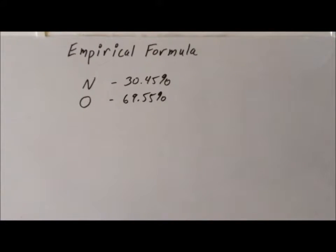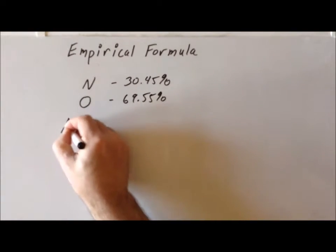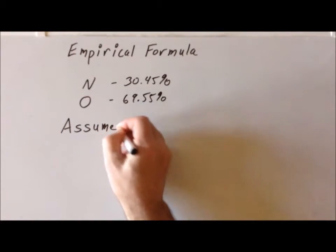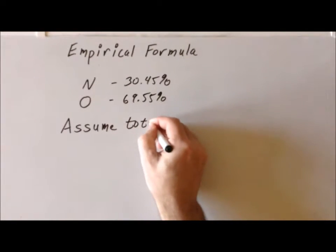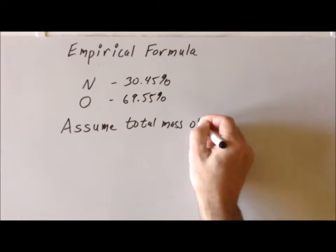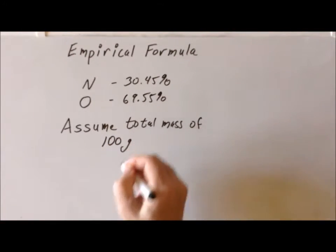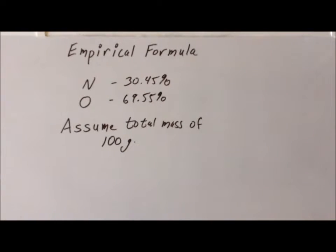Now, to calculate the empirical formula from this data, we have to immediately make one assumption. And the assumption that we're going to make is we want to assume that we have a total mass of exactly 100 grams of our compound. The reason why we can do this, why we can make this assumption, is because the percent mass is an intensive property. That means it doesn't matter how much material we have, the percent mass of each element will not change.